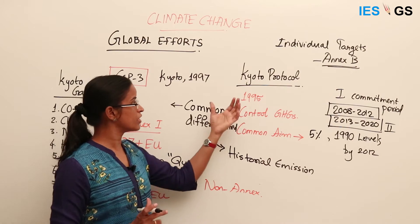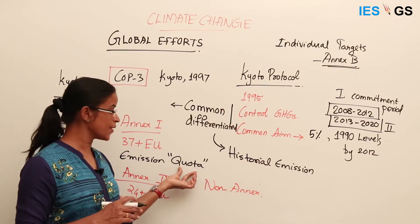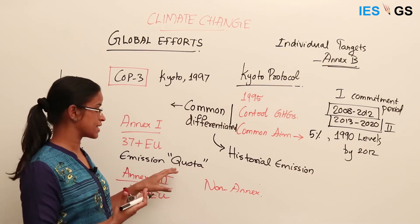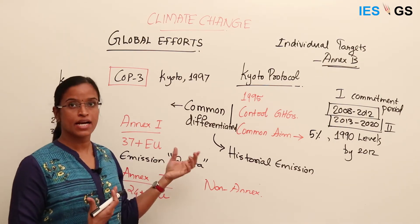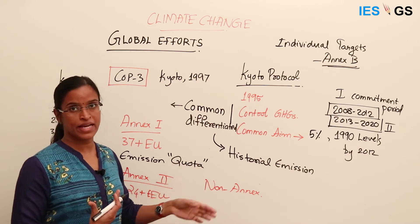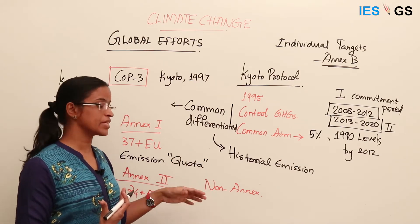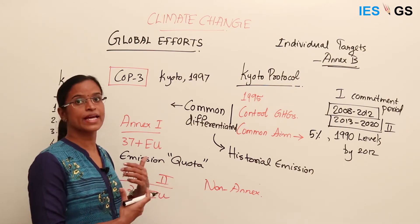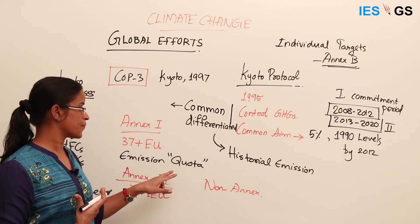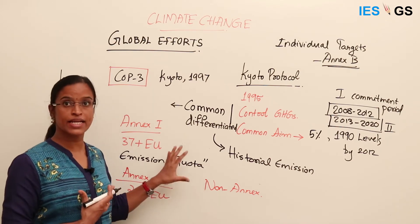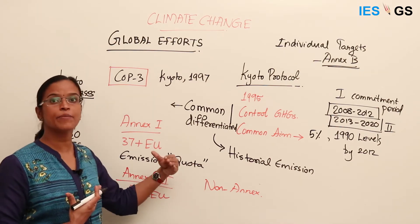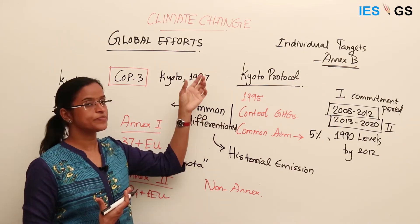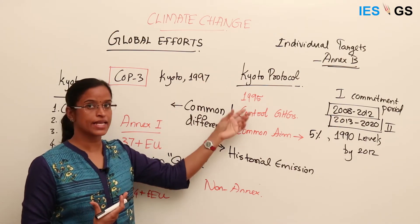The Kyoto Protocol works through quotas, and if countries are not following the quota limits there are different mechanisms: joint implementation, carbon trading, and clean development mechanisms, by which they can buy extra quota or sell quota. Carbon trading is meant to encourage countries to take up more emission targets if they are able to implement more than they have committed.